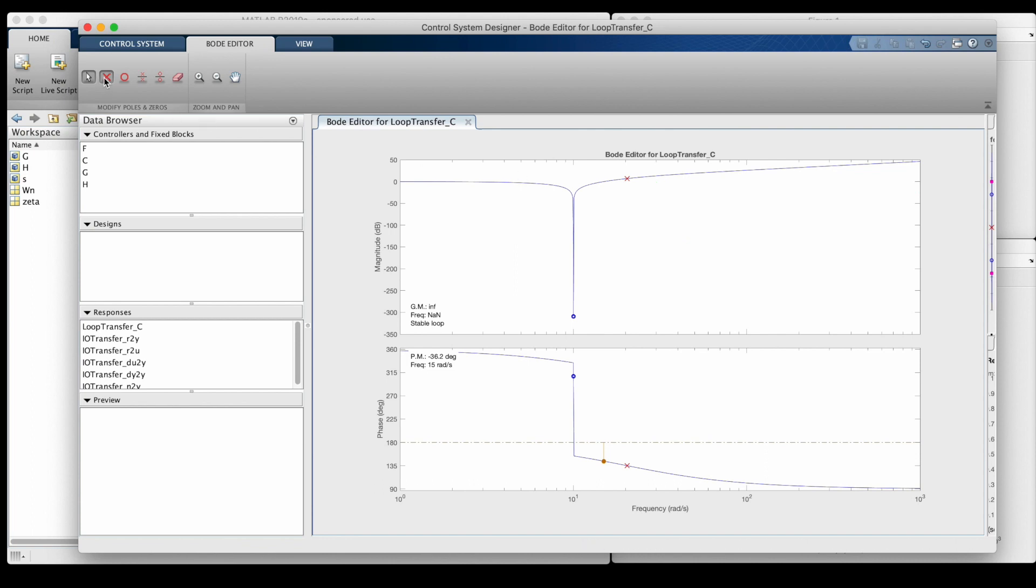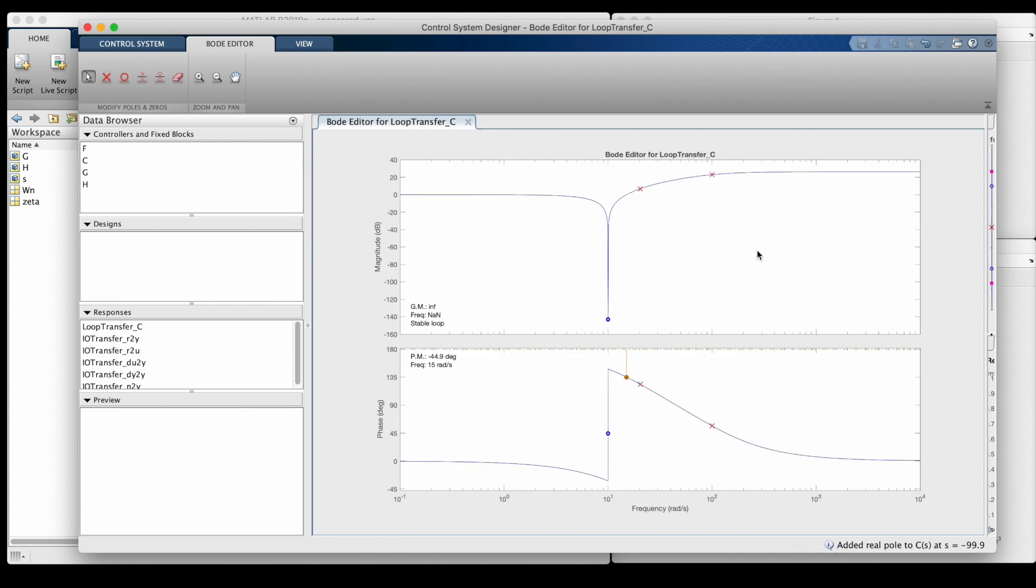And I can add a second pole in another random spot, and see that this one also bends the gain plot down the final 20 dB per decade, so that the high frequency gain is flat.